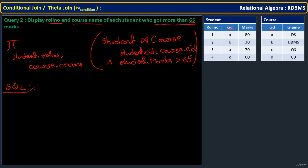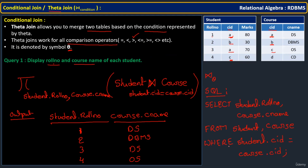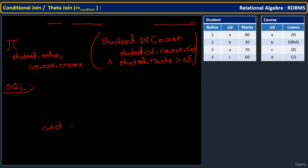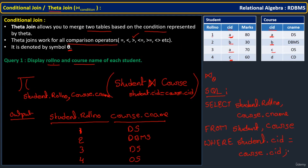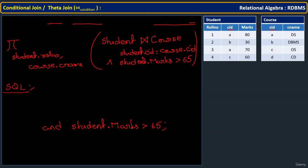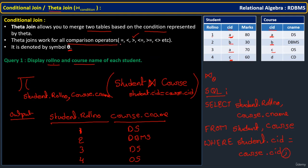The corresponding SQL adds one extra condition in the WHERE clause: AND student.marks > 65. Everything else remains the same. This is how conditional join, or theta join, is used. Any time you join tables using a condition with comparison operators in the WHERE clause, that is a conditional join — also called a theta join.